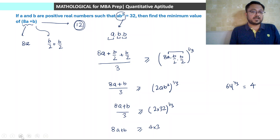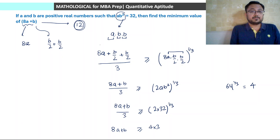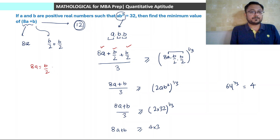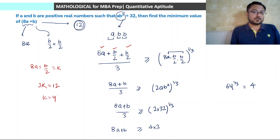Equality holds when all parts are equal — when 8a is equal to b by 2. Each part equals k, so 3k equals 12, giving k equal to 4. Therefore 8a equals 4 so a equals 1 by 2, and b equals 8.